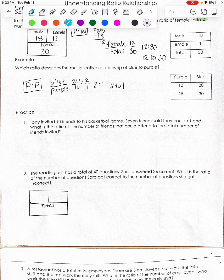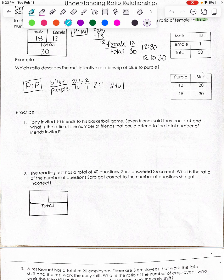Okay, I'm going to do just a couple questions here. This says, Tony invited 10 friends to his basketball game. 7 friends said they could attend. What's the ratio of the number of friends that could attend to the total number of friends invited?